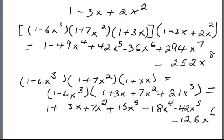I started off wanting to get rid of the 3x term, and I multiplied by 1 plus 3x. Then the next term I had to get rid of was the 7x squared term. When I multiplied that out I got a polynomial, and then I needed to get rid of the 6x cubed term. After multiplying these polynomials together, I had 1 minus 49x to the 4th plus 42x to the 5th minus 36x to the 6th plus 294x to the 7th minus 252x to the 8th. The next term to get rid of is the x to the 4th term, but I think this process is going to go on forever, so this is the partial construction of the multiplicative inverse.